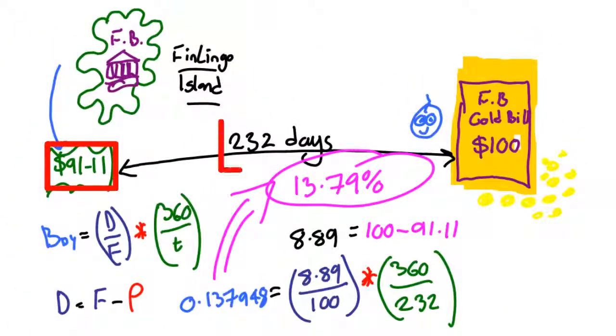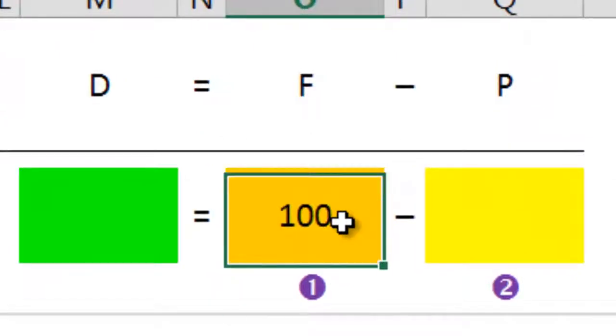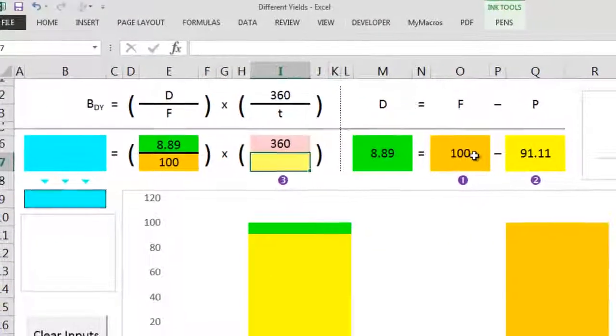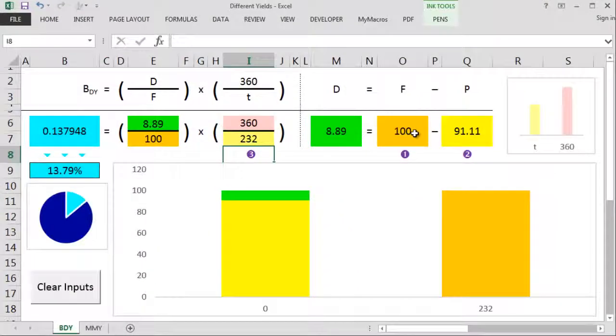Just to check our own mathematics, let's plug these figures into a cunning Excel spreadsheet I set up to make sure we've got the right numbers. So that's a face value of 100, a dollar price of 91.11, and a time to maturity of 232 days before Sean can go and get the $100. This gives us what we wanted,